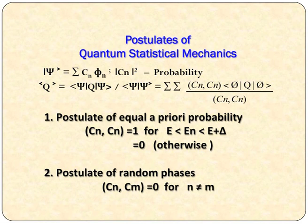According to quantum mechanics, any physical variable can be represented by an operator. This operator can be represented by average notation: average Q can be represented by ⟨psi|Q|psi⟩. This is the statistical mechanical representation, where C_n is nothing but a probability. This probability is a function of time. Now this postulate has been derived into two parts: one is the postulate of equal a priori probability, and the postulate of random phases.